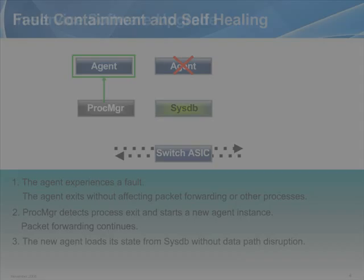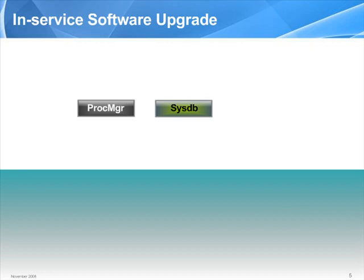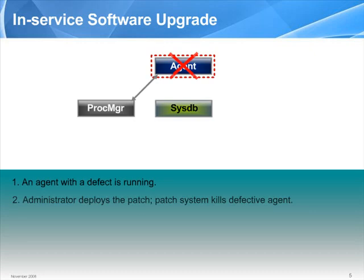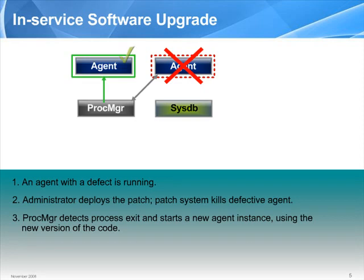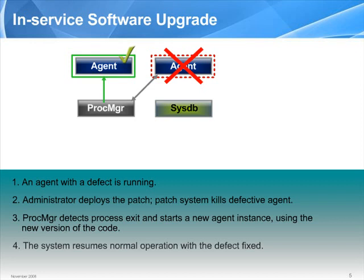The same architectural features support in-service software upgrade. When an improved version of an agent is available, the old agent is terminated. The new version is automatically started, connects to SysDB, and resumes processing as though nothing had happened. EOS's in-service software upgrade capability significantly reduces the need for maintenance-related downtime.